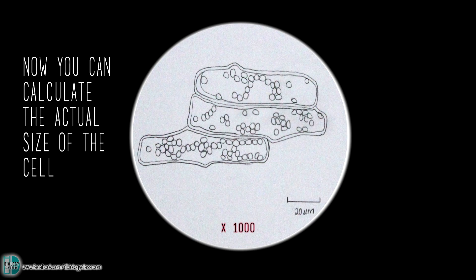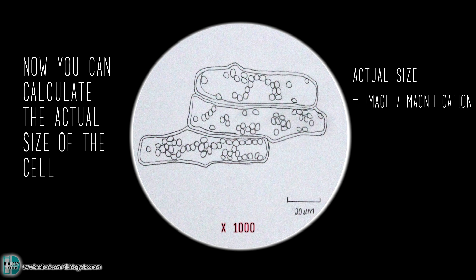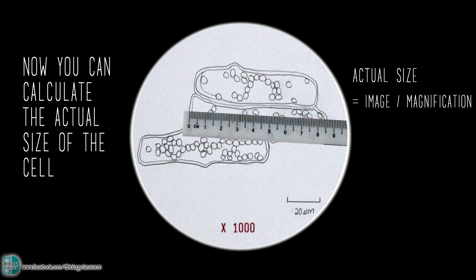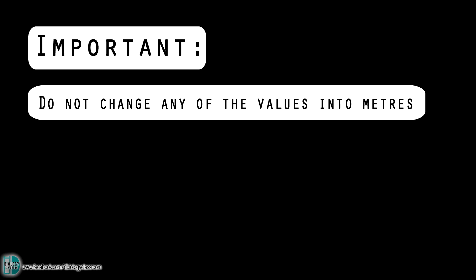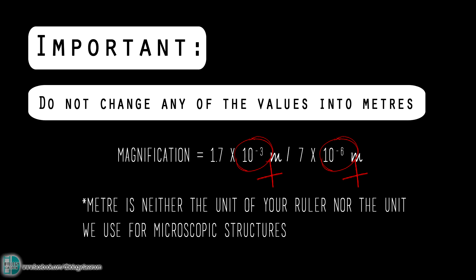When you have the magnification of a picture, you can calculate the actual size of an object by rearranging the formula. The actual size equals image size over magnification. Measure the image size of the object. Then divide it by the magnification and you will get its actual size. When you are dealing with questions involving this calculation, do not change any of the values into meters and work with it, as the unit of your ruler is millimeters and the unit for cells is micrometers or nanometers.